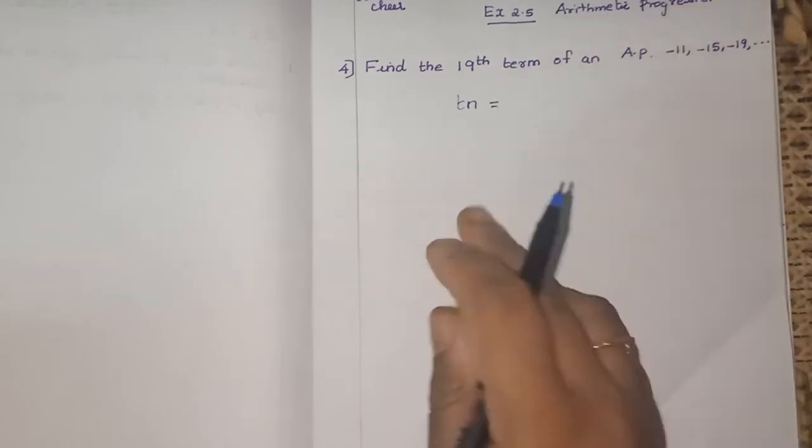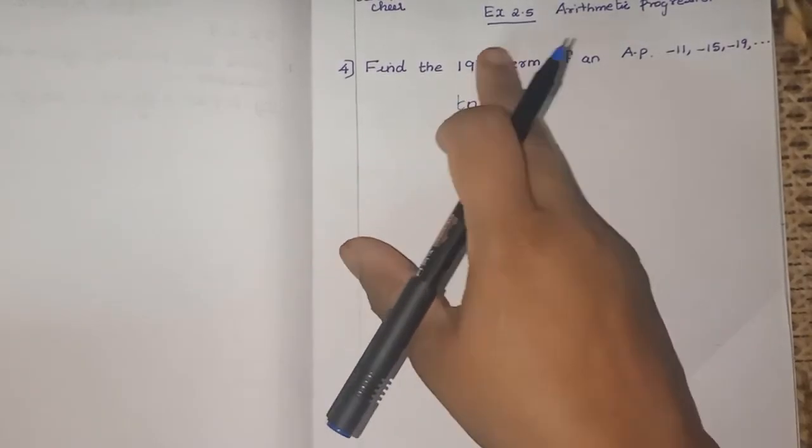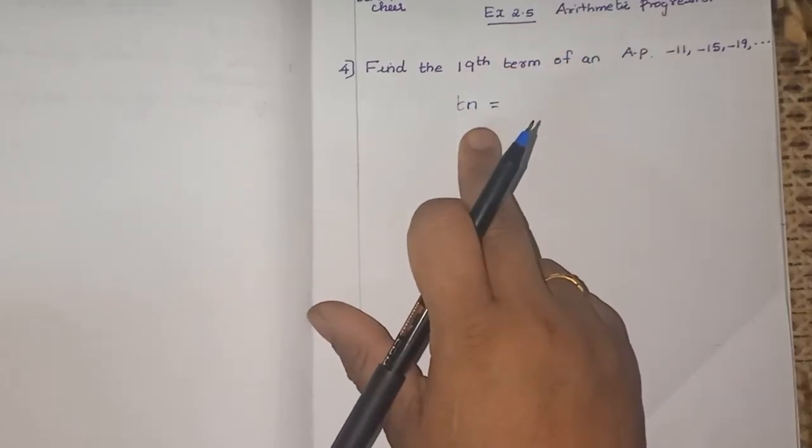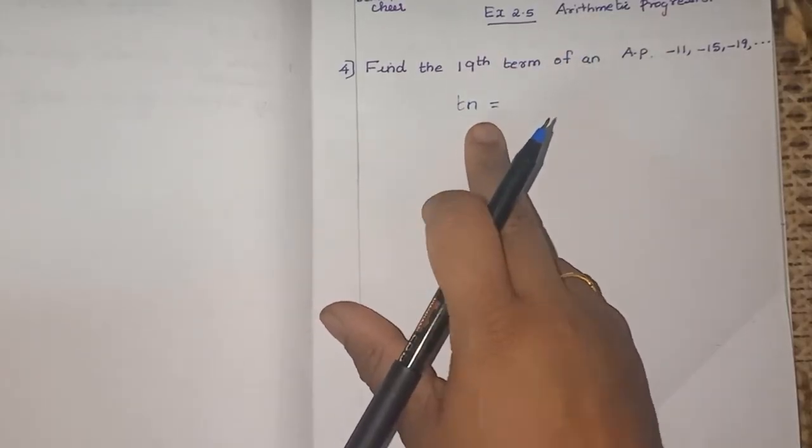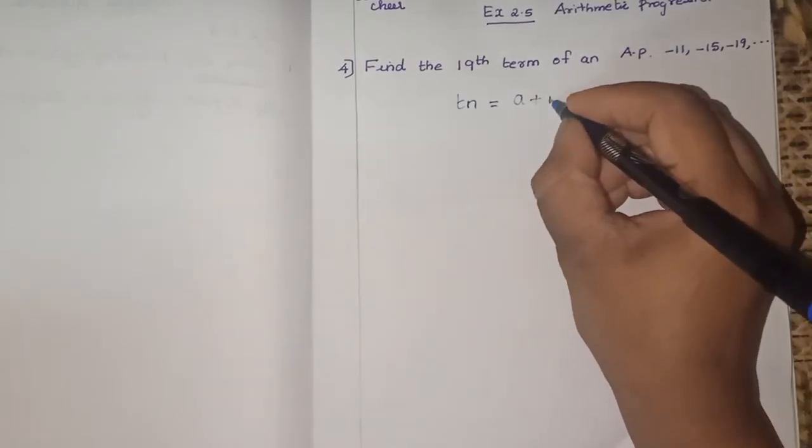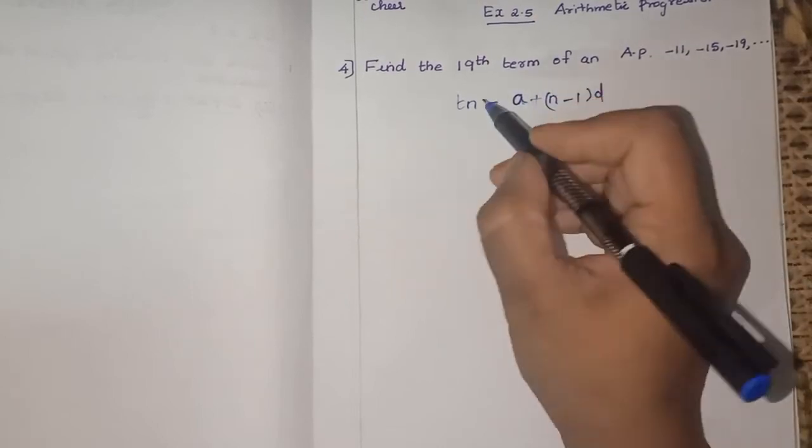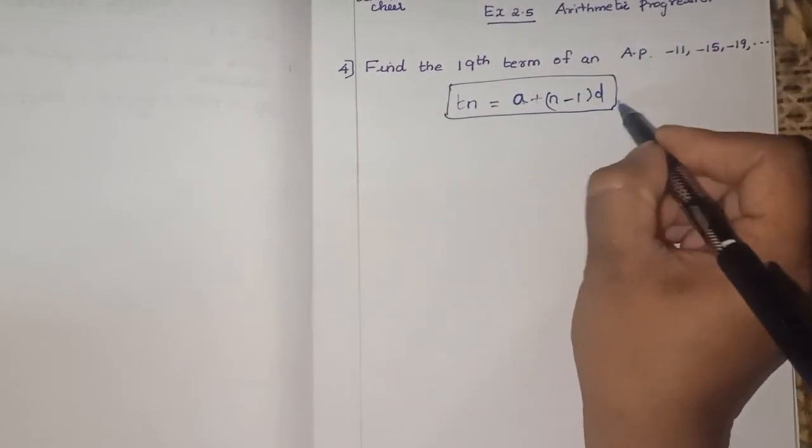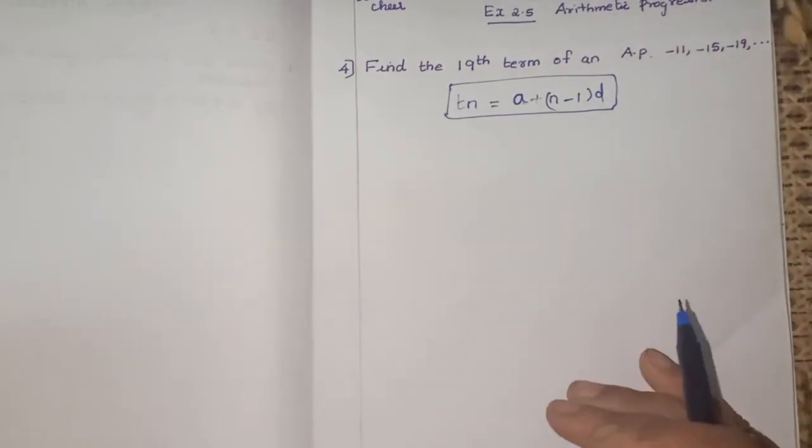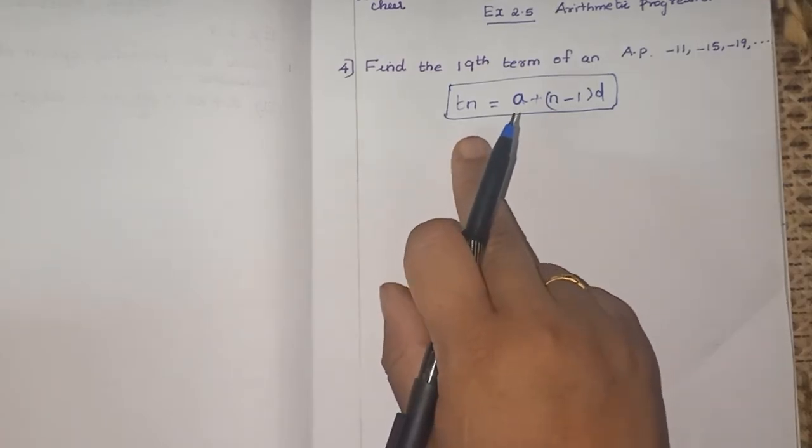TN is equal to, we are writing nth term formula. We want 19th term, so N is 19. TN formula is A plus n minus 1 into D. This is very very important formula. So please children remember it, write it many times so that you can remember it very well. This is the nth term of an AP formula.